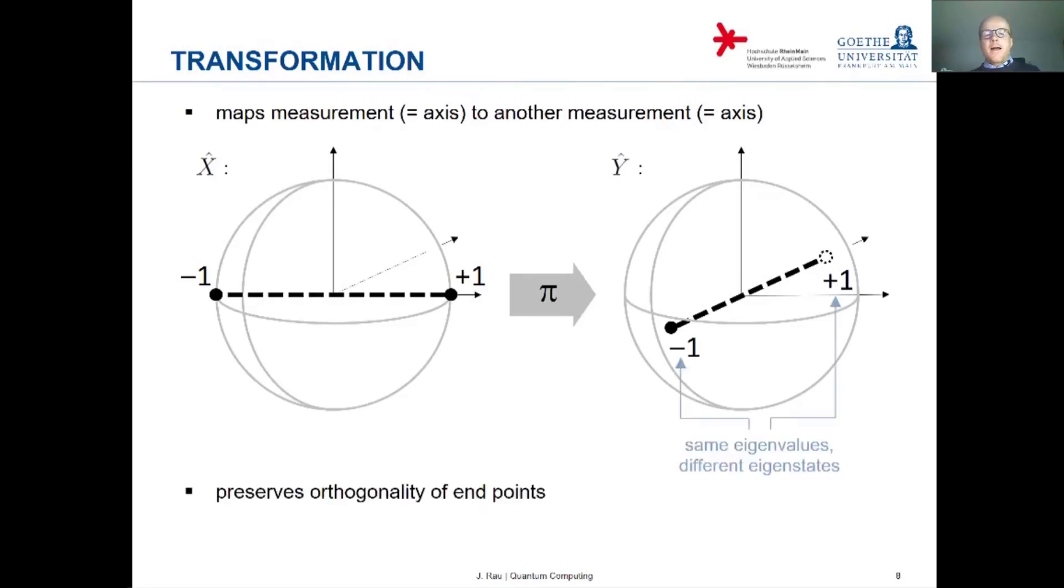And there's a very general theorem by Wigner that says that an arbitrary transformation that preserves orthogonality is either unitary or anti-unitary. Now we won't go into anti-unitary transformations. These are transformations that involve taking the complex conjugate of a state. And in physics, they correspond, for example, to the time reversal operation. But this will not concern us here in quantum computation. We will stick to unitary transformations.